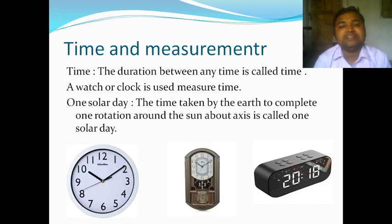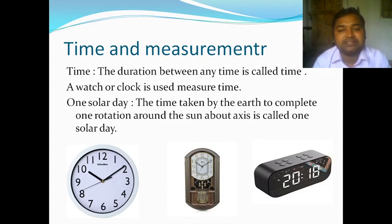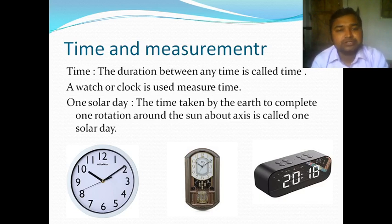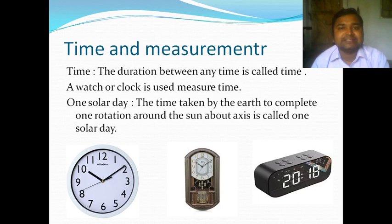What is time? The duration between any two events is called time. We can measure time using a watch or clock. The SI unit of time is second. One solar day means the time taken by the Earth to complete one rotation around its axis — the sun takes 24 hours, and that is called one solar day.